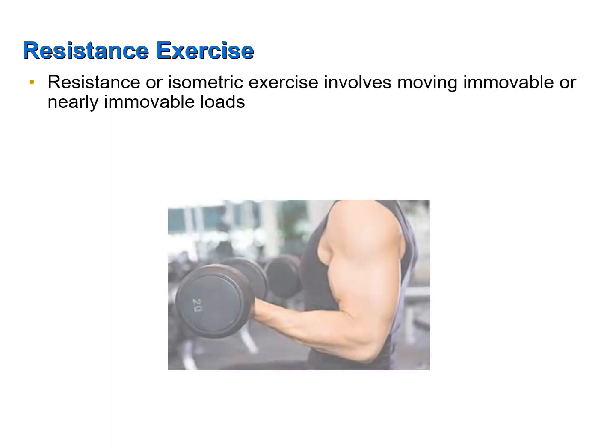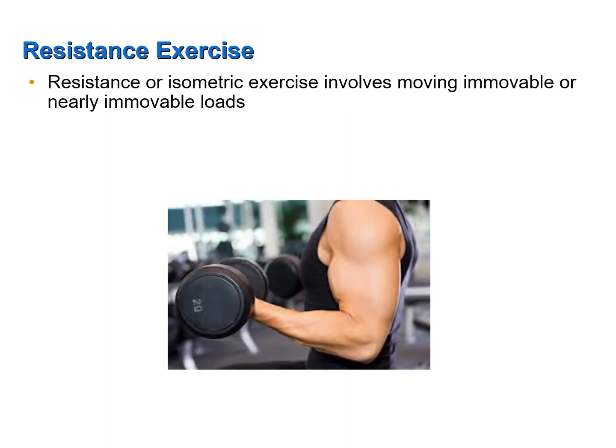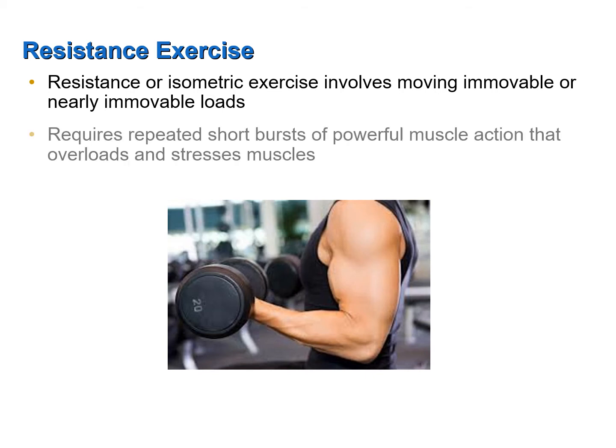Resistance or isometric exercise involves moving immovable or nearly immovable loads for brief periods of time. Resistance exercise requires repeated short bursts of powerful muscle action that overloads and stresses muscles. Because muscle activity is relatively brief, most ATP is obtained from creatine phosphate and glycolysis. Very little ATP is obtained from aerobic respiration.